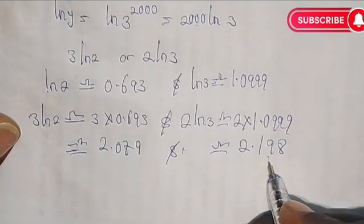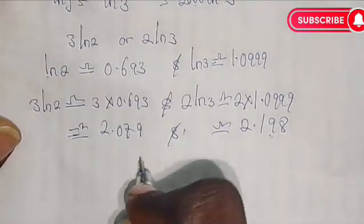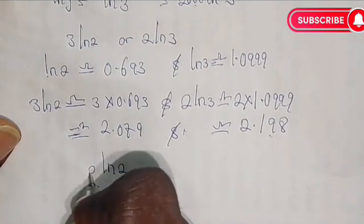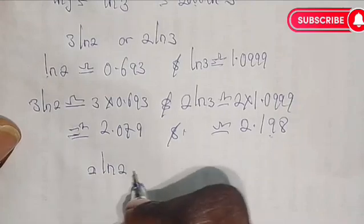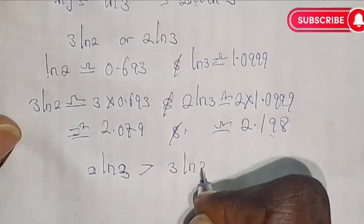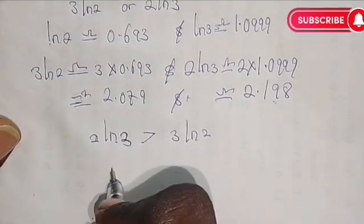Looking at this now, we can say that 2.198 is the bigger number. This implies that 2 times the natural log of 3 is greater than 3 times the natural log of 2.